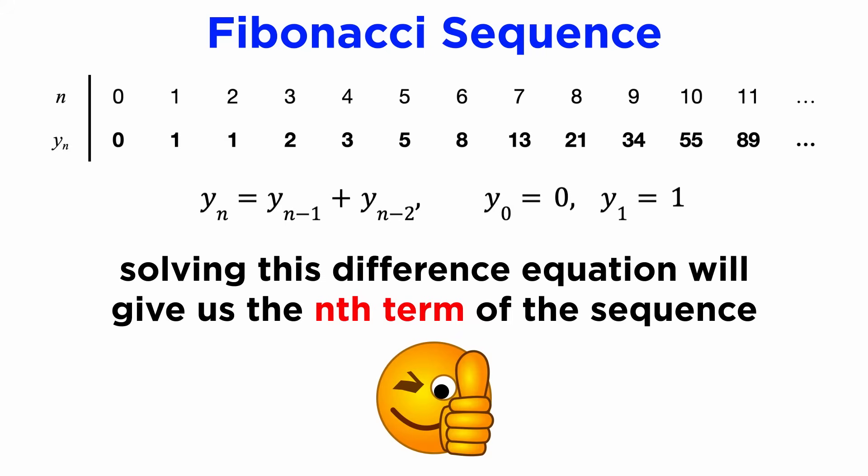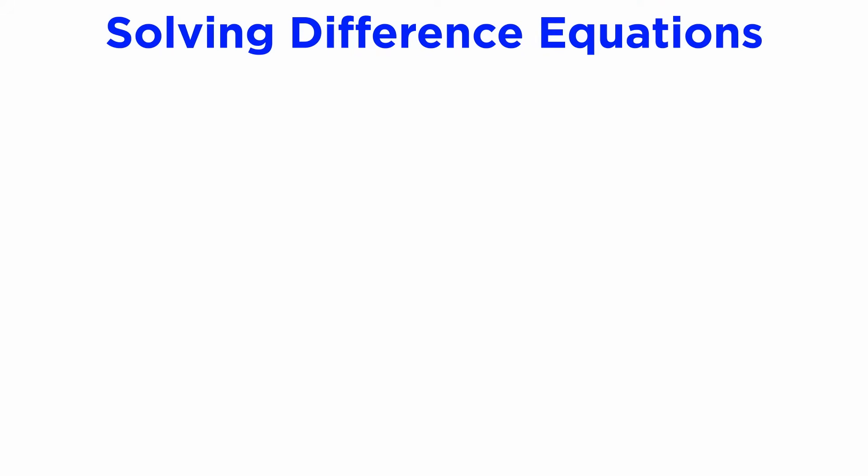What we have here is called a difference equation, and its solution will give us the nth term of the Fibonacci sequence. So let's see how to solve it. The techniques for solving linear difference equations are very similar to how we solved linear differential equations.